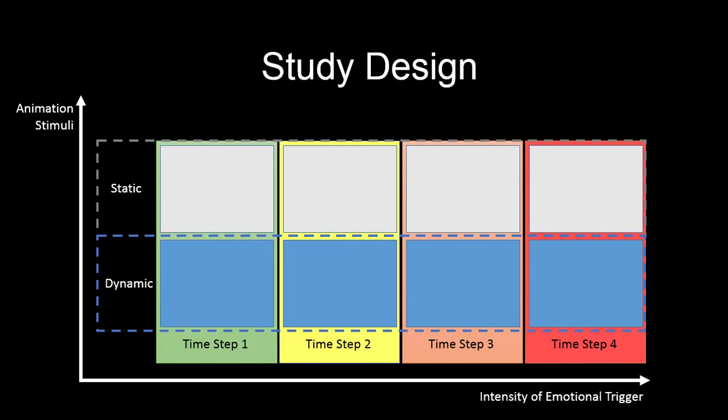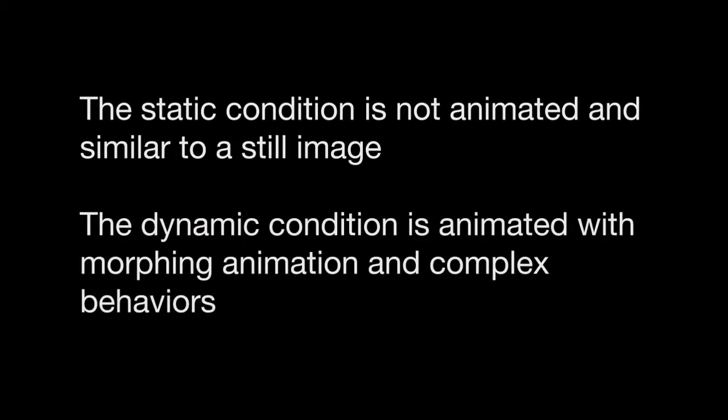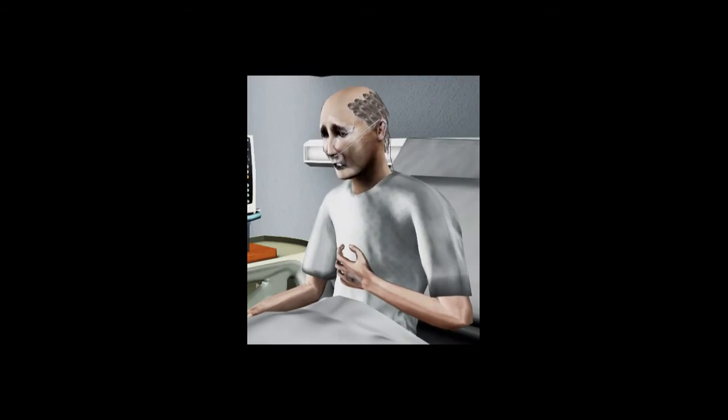In order to isolate the effects of the character animation, each participant was randomly assigned to one of two simulation conditions. The first condition was the dynamic animation condition. In this condition, the virtual agent is fully animated, meaning he exhibits facial morphs, texture changes, and movement of the upper torso, appendages, and head.